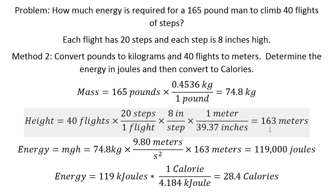Now the formula is mgh for the energy. I take my kilograms times the acceleration due to gravity, 9.80 meters per second squared, times 163 meters. The units for that would be kilograms meters squared per second, which is a joule. So it's 119,000 joules.